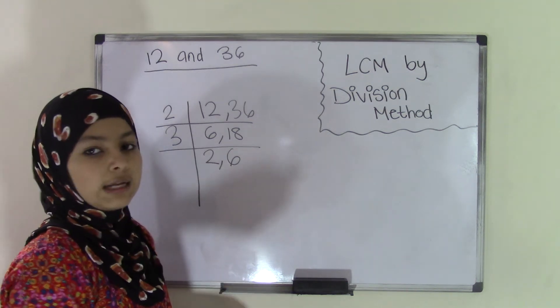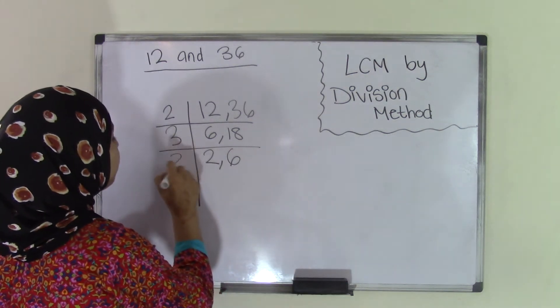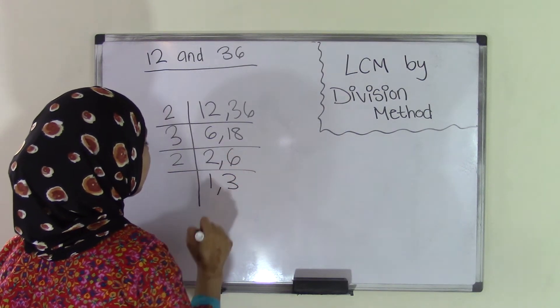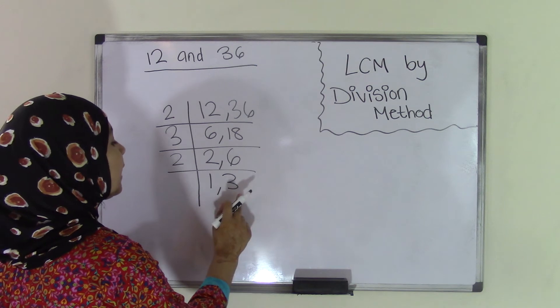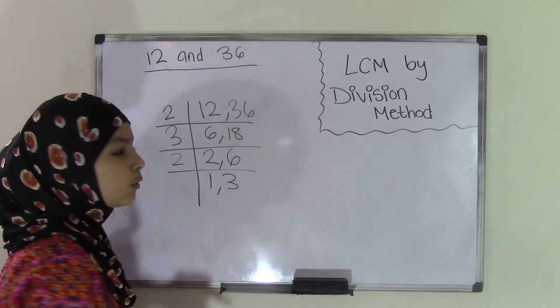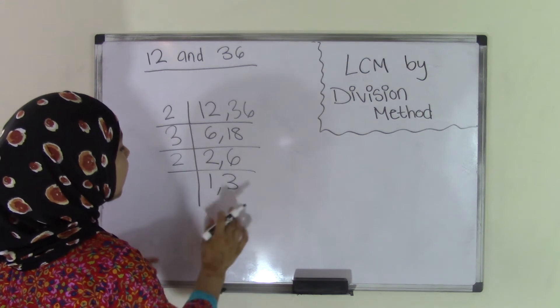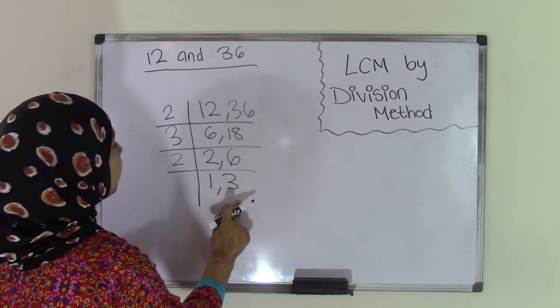What number can go into 2 and 6? 2, right? So 2 goes into 2 once, and 2 goes into 6 three times, leaving us with 1 and 3. Since we already have 1, we can't move on, even though we could still divide by 3, because we need a number divisible by both. So we end it here.